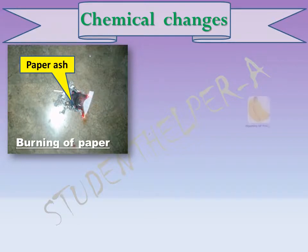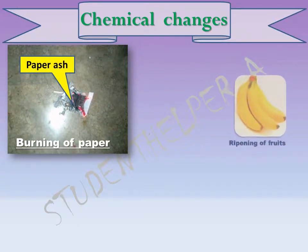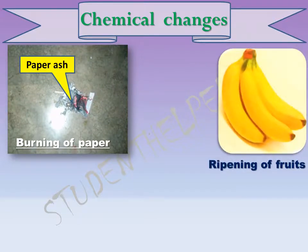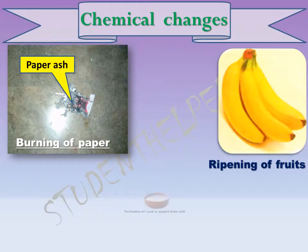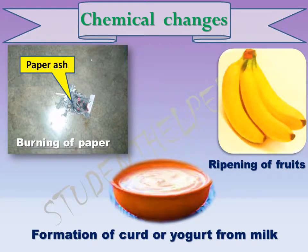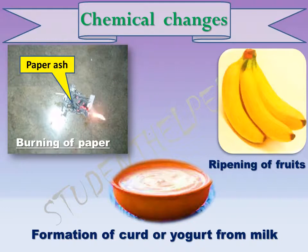Second example: ripening of fruits. Ripe fruits differ completely from raw fruits. Third example: formation of curd from milk. There is a lot of difference between curd and milk, and milk cannot be made from curd. Many of these changes can be seen by all of us. These are all chemical changes.